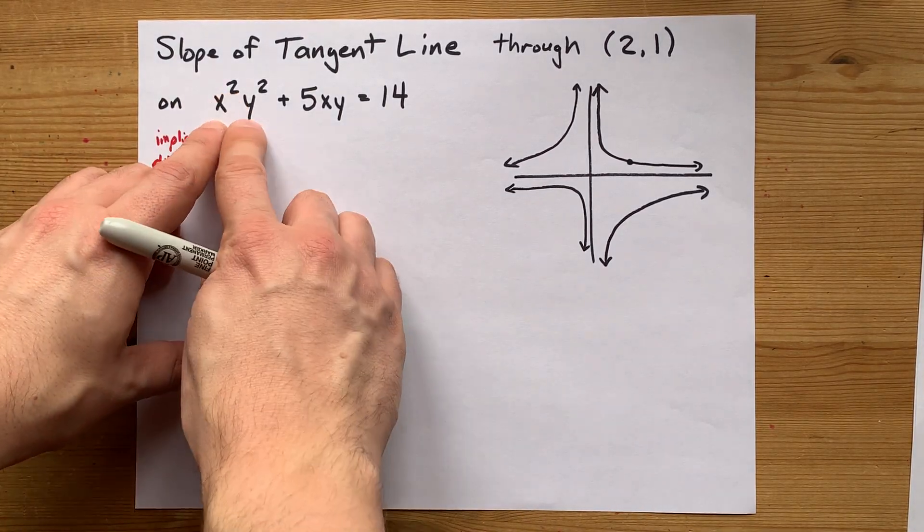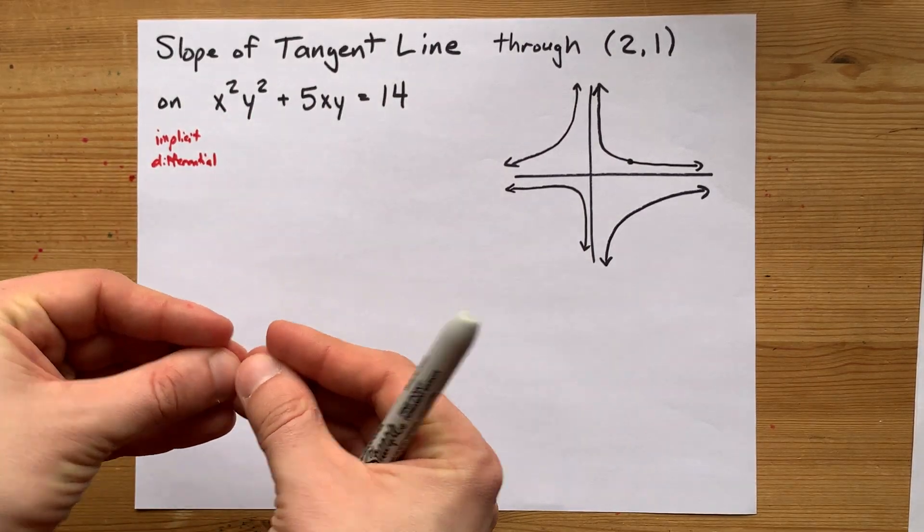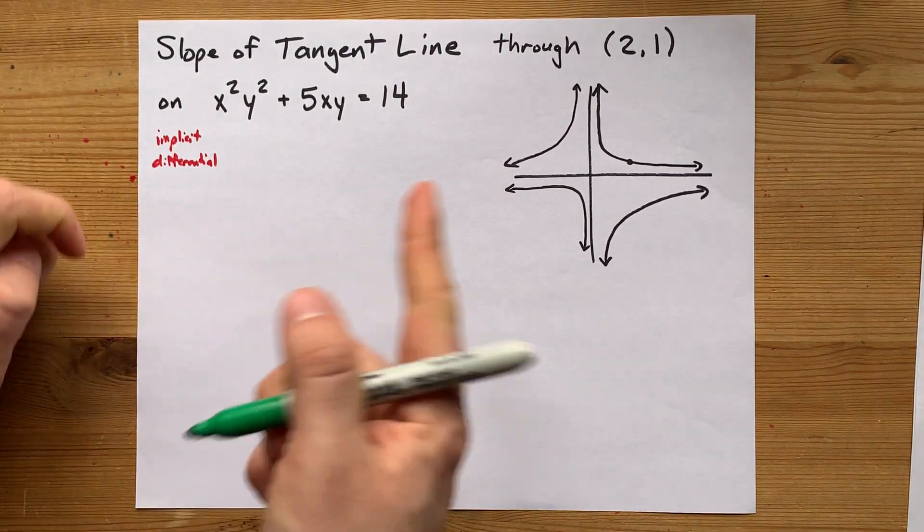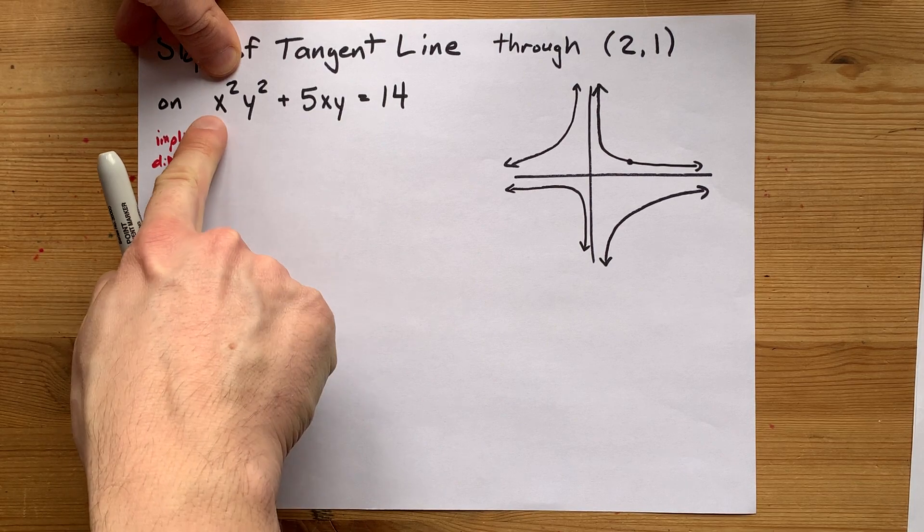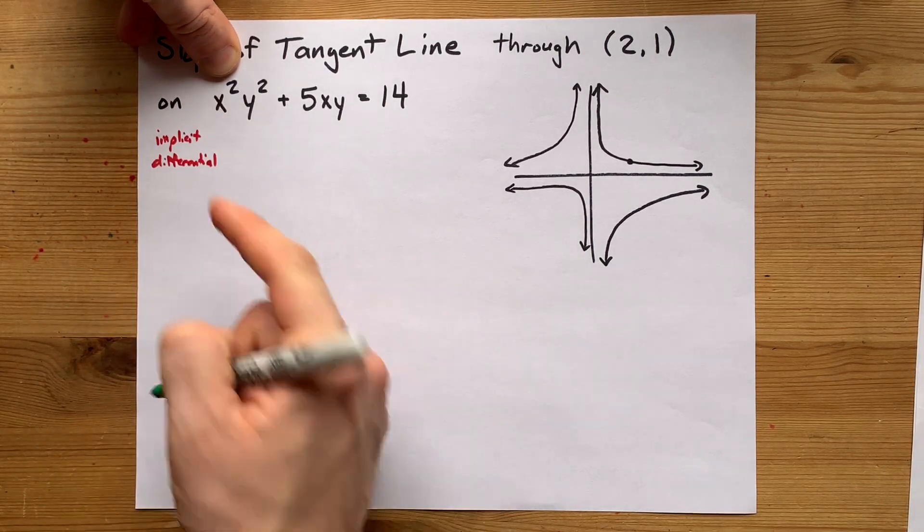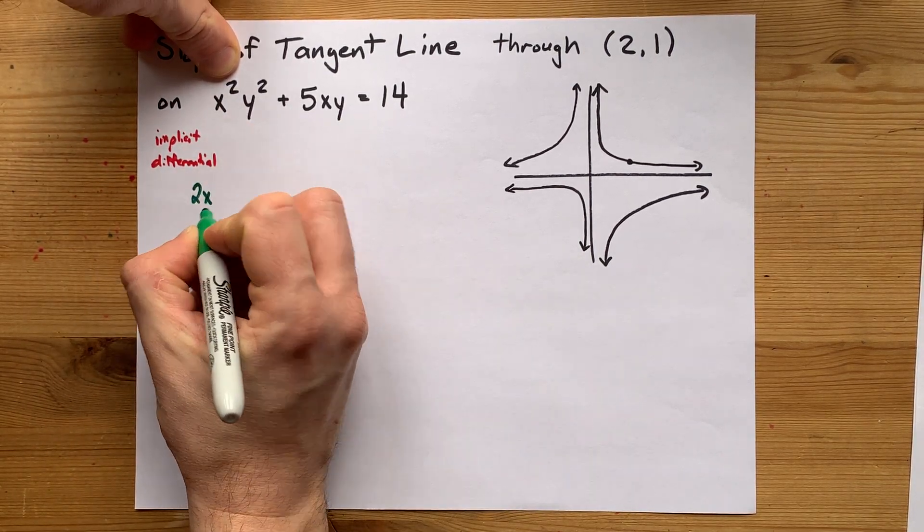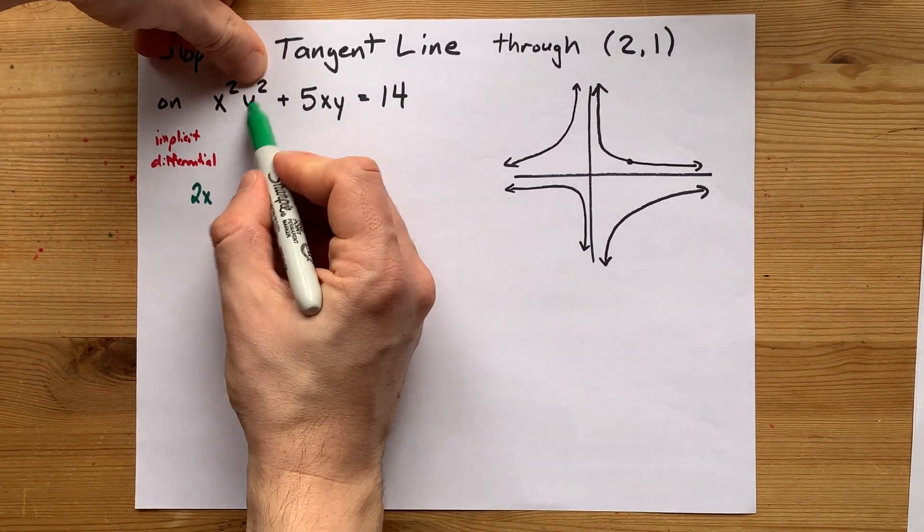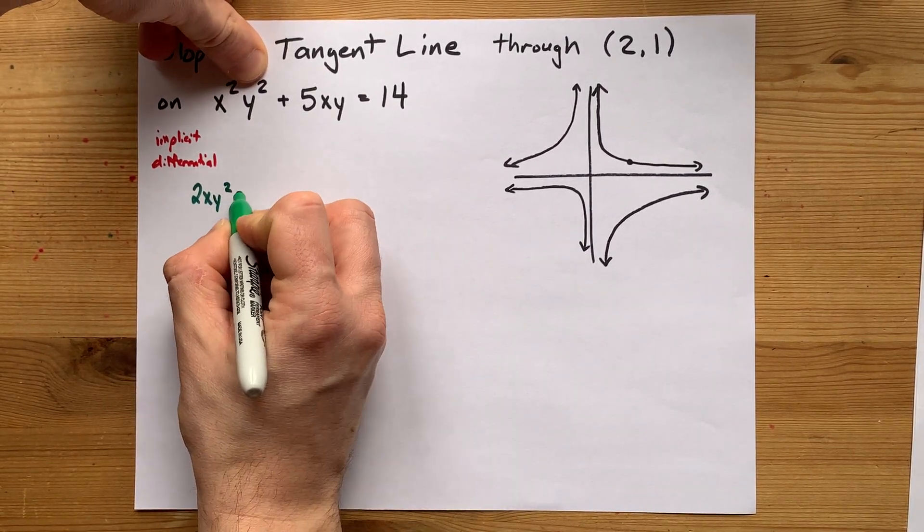x squared y squared is a product. We're going to have to use the product rule there. The product rule is the derivative of this first thing, the derivative of x squared is 2x, times the second thing as is, plus